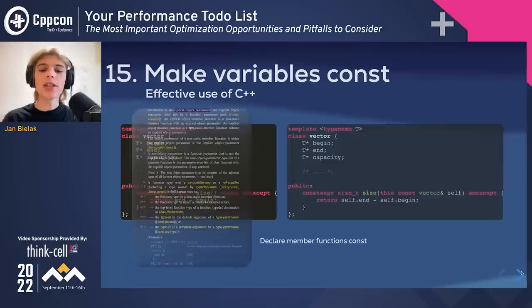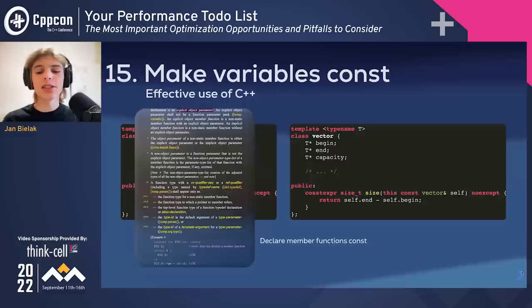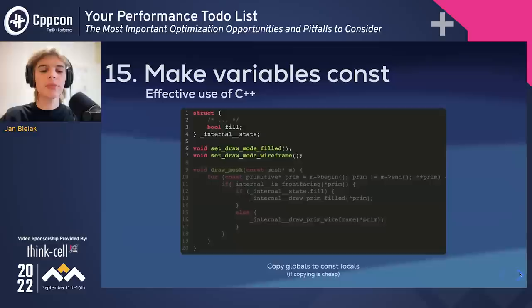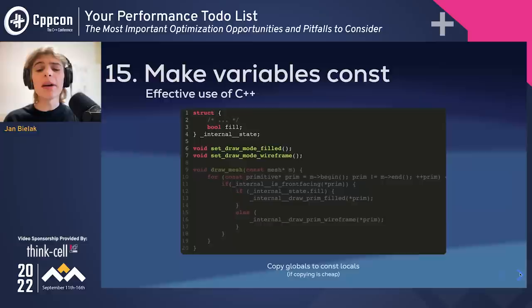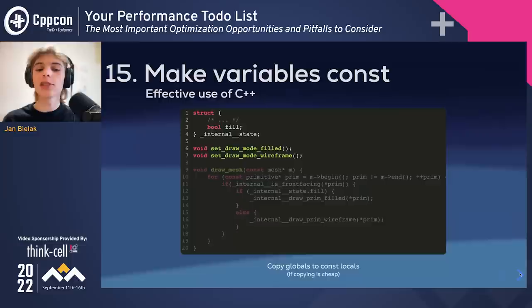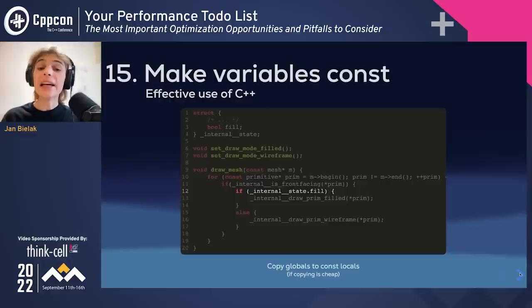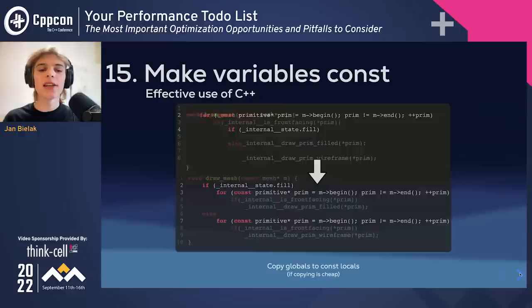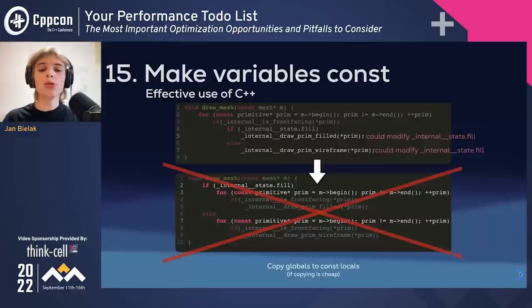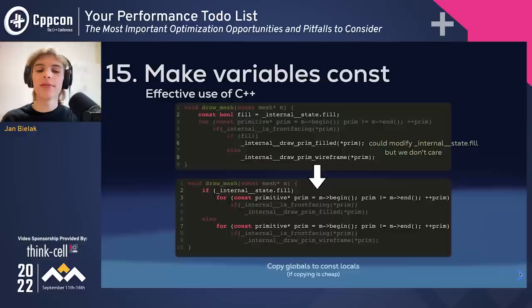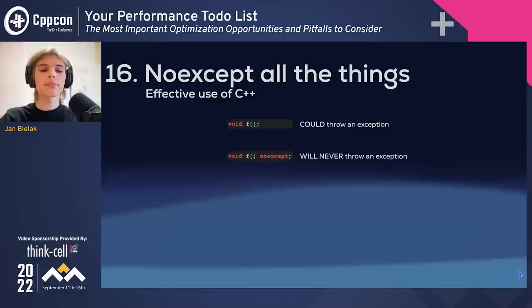Since C++23, it is possible to use an explicit object parameter declaration to mark a function const, working similarly to how methods work in Python or Rust. Another group that can be made const is global variables. Suppose you're maintaining a legacy graphics library that operates like a state machine, storing all configuration in global variables. A function drawing a mesh loops through all its primitives and draws them in wireframe or filled depending on global state. The compiler cannot hoist this branch out of the loop because it must assume drawing functions could change the global state. This problem can easily be solved by storing the global variable in a local constant.